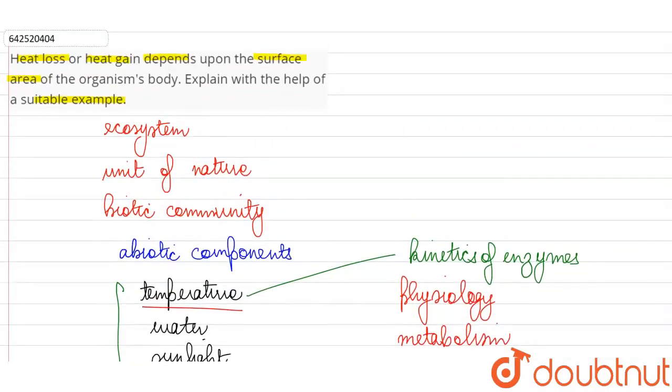So, what they are saying here is that heat loss or heat gain depends upon the surface area. This is correct.